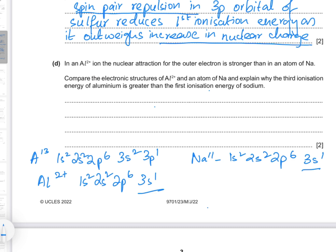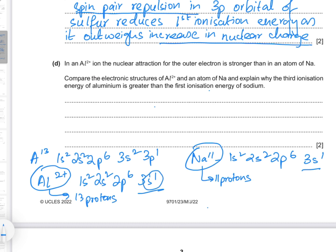Al²⁺ has a greater nuclear charge compared to neutral sodium — 13 protons versus sodium's 11 protons. This means the attraction for the 3s¹ electron in aluminium is greater compared to sodium, so the ionization energy of Al²⁺ is greater than the ionization energy of sodium.